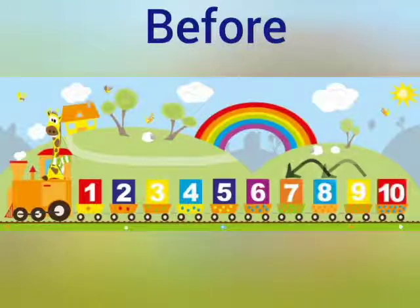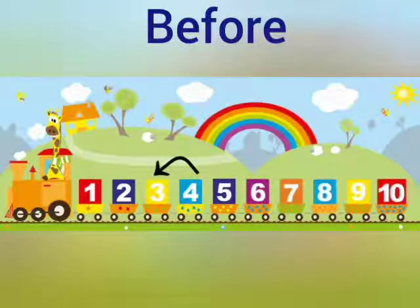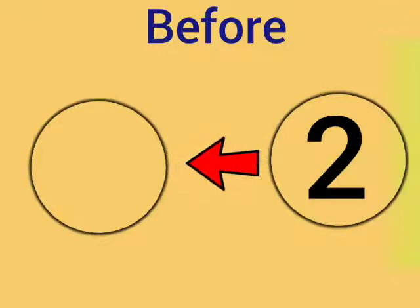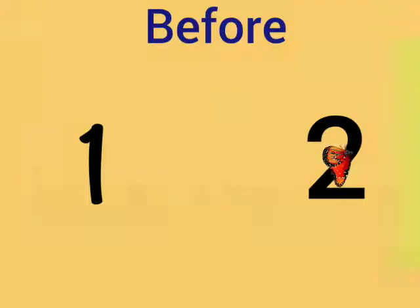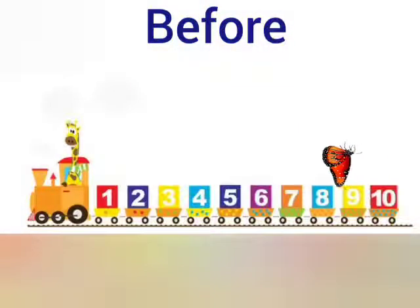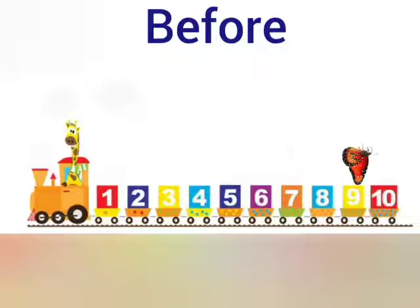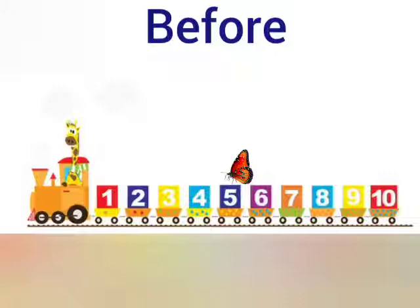Now let's learn about before. The butterfly is on number 10. Which number will you get when the butterfly jumps one number backward? We will get 9.